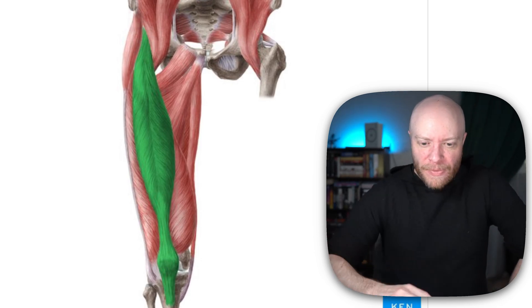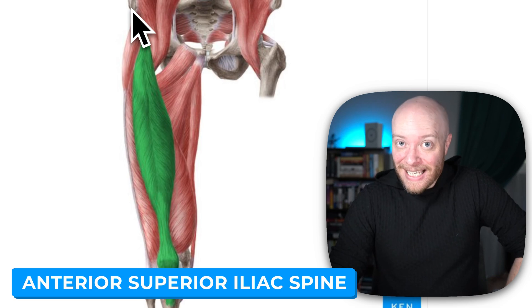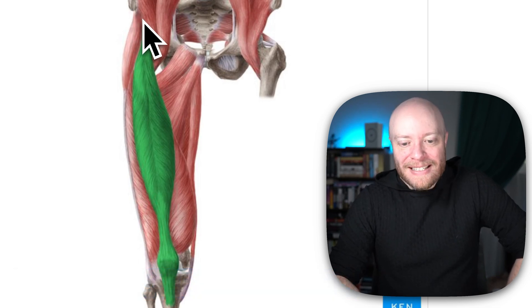It's just on the front of your hip. That's called the anterior superior iliac spine. Again, another mouthful. So right below it is the origin of the rectus femoris.